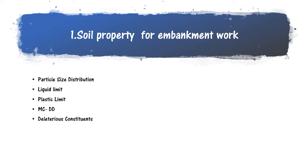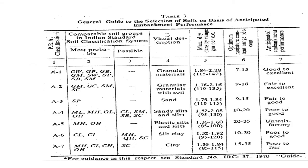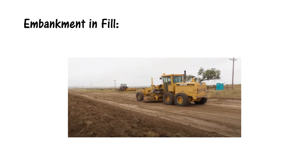The fill materials listed in the IRC code are as follows: granular material is rated good to excellent and is always preferred. For embankment on soil, fair-to-excellent granular material with soil is used. The optimal moisture content is defined for clay rated poor to fair, and for silty clay rated poor to good — dry density and optimal moisture content requirements must be met based on classification.